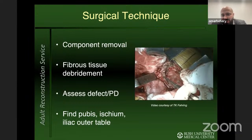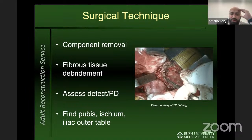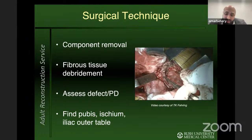Assess the defect and test for discontinuity — I use a cobb elevator to push on the ischium and see how much mobility exists between the inferior and superior hemispheres. I recall a case about a year ago of chronic discontinuity where, when we went in, the columns had actually healed over time. She ended up with a 2C defect that we solved with medial augments and a hemispherical cup. I still like to examine intraoperatively to confirm what imaging shows.